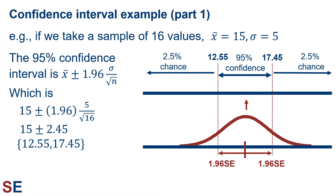For example, if we take a sample of 16 values from a population and they have a mean of 15, and we know the population standard deviation is 5, we can calculate our confidence intervals. Using the properties of a normal distribution, the middle 95% region would be 1.96 standard errors above and below the sample mean. Plugging these values in gives us a result of 15 plus or minus 2.45, which gives us a range for our 95% confidence interval of 12.55 to 17.45.